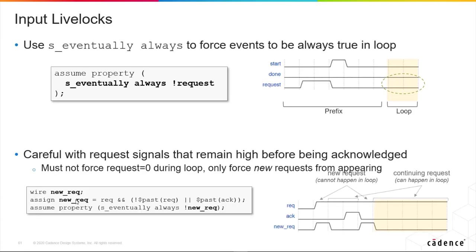What we can do is create an auxiliary code signal called 'new_req,' indicated by a request where on the previous cycle there was no past request and no past acknowledge. We then assume that eventually there is always not a new request. New request goes high here; it goes low again because the request that goes high stays high, so 'not $past(req)' will not be true. With an ACK present, that also triggers new_req. In the loop — indicated by the yellow shading — we can't have new requests anymore because we've said 'S_eventually always no new_req.' So although there's an outstanding request here that doesn't get responded to, neither the tool nor the design can make new ones.